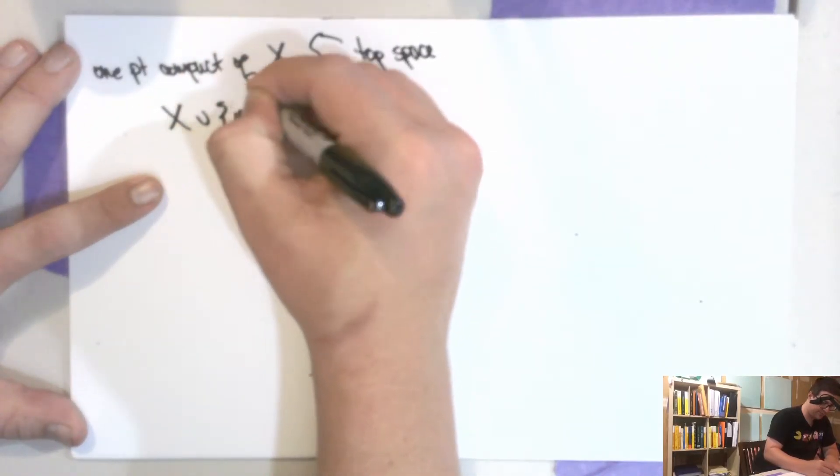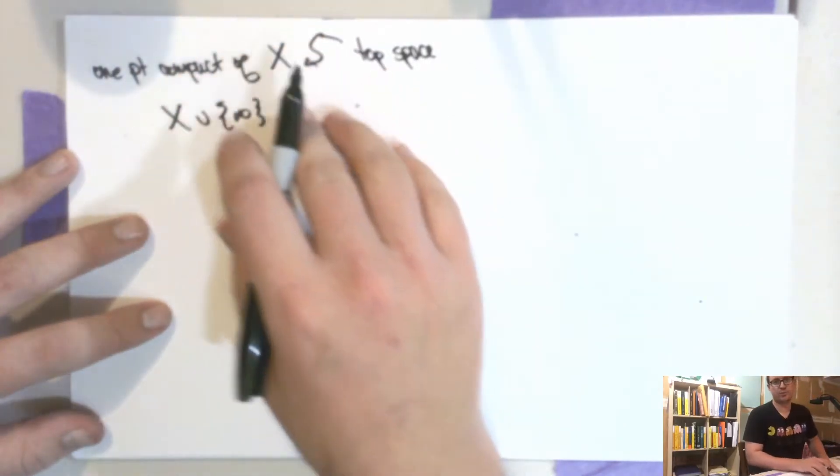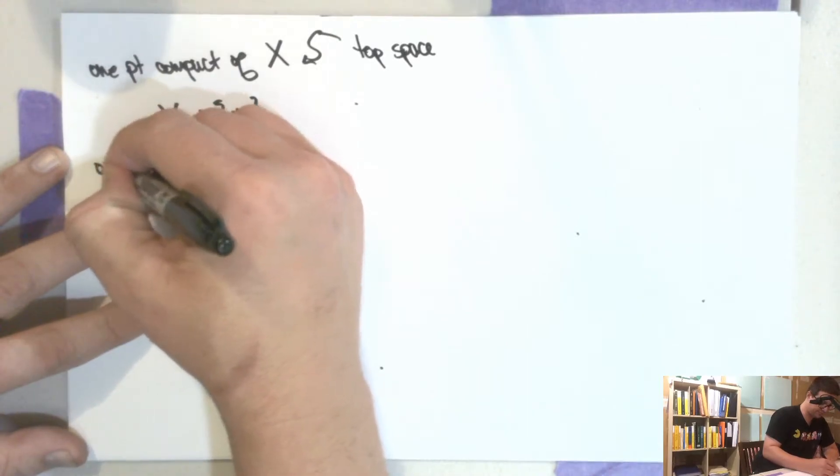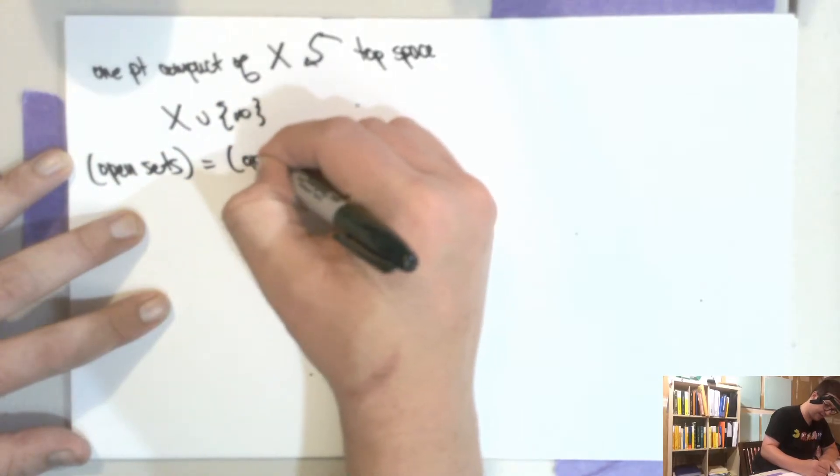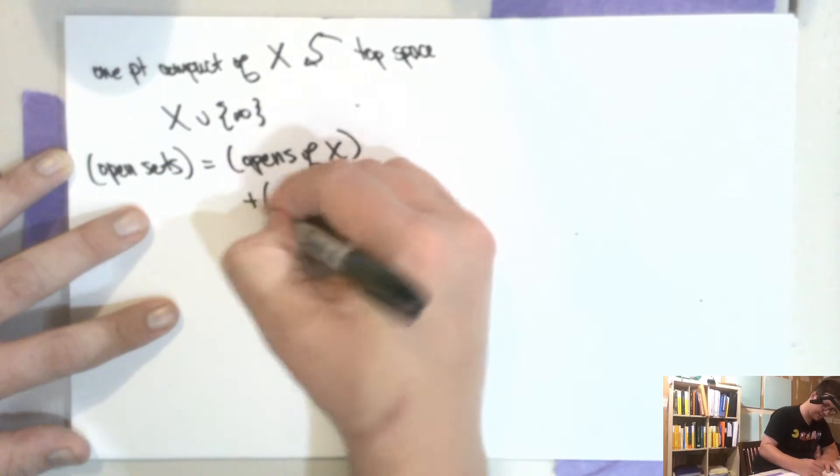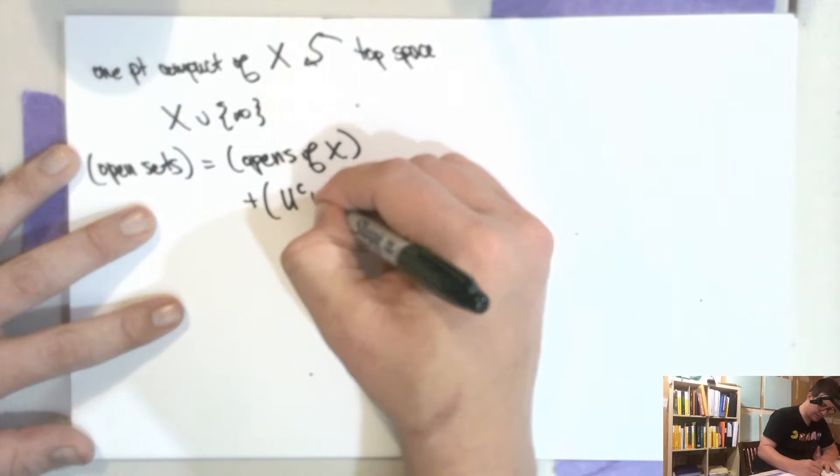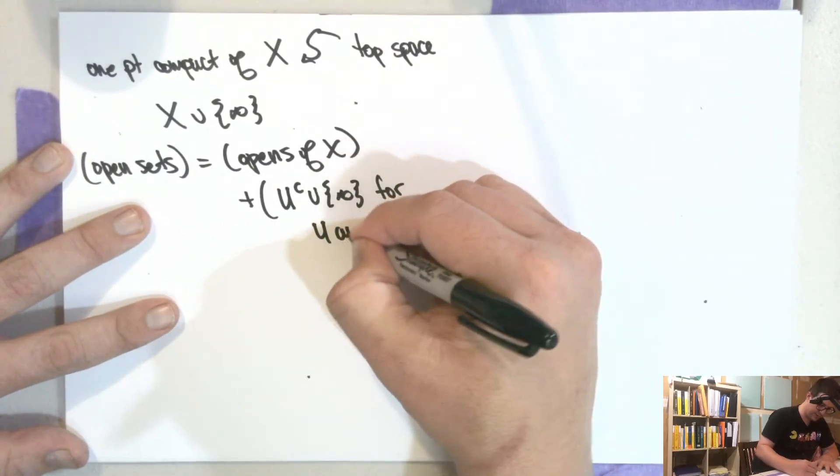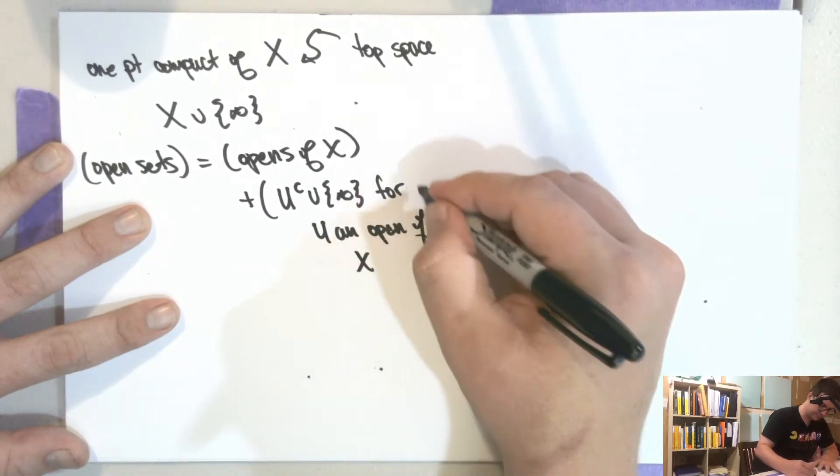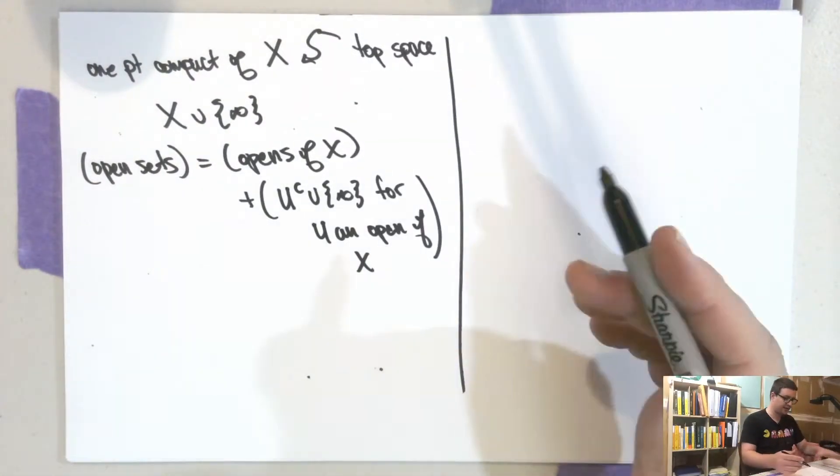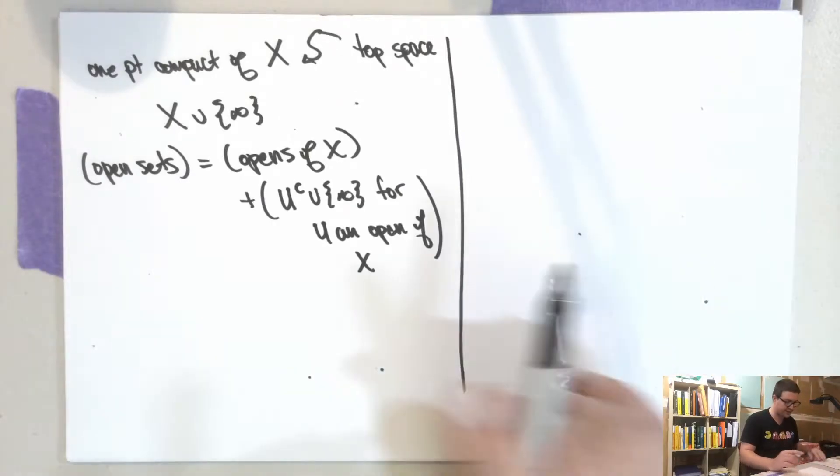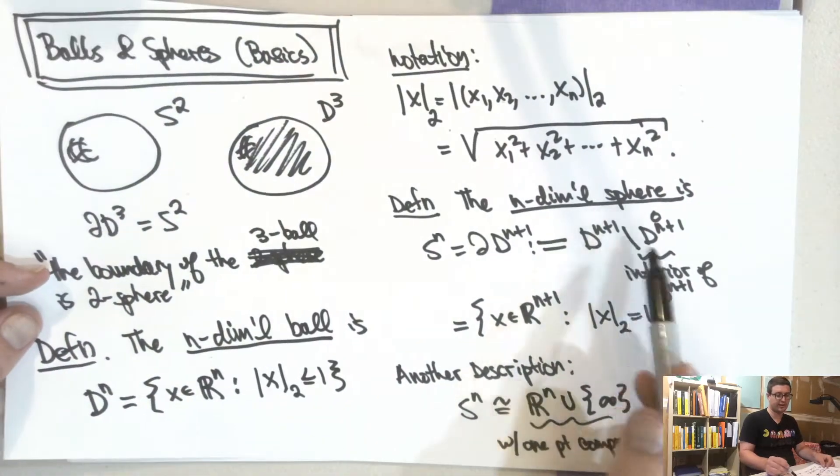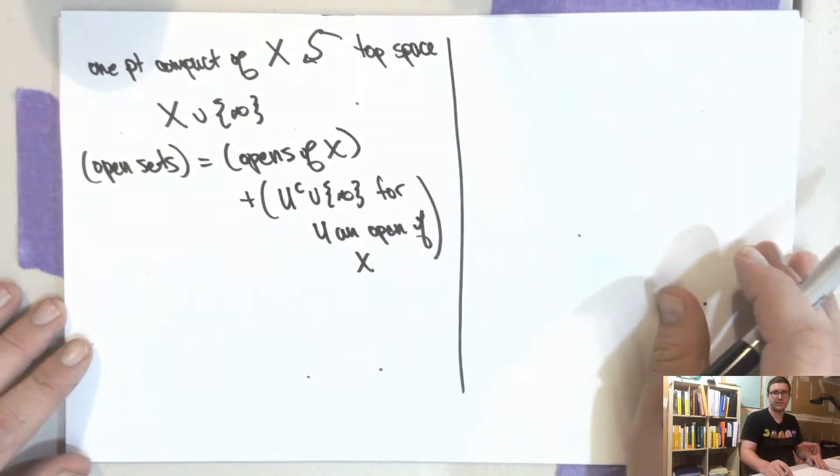So the one point compactification topology is the following. Of some topological space X. So this is equal to X union infinity. And then you have to throw in some extra open sets. And so the extra open sets that you throw in are, so the open sets are equal to the open sets of X plus complement union infinity for U, and open of X. So this is this one point compactification. So you can check this as a compact topological space.